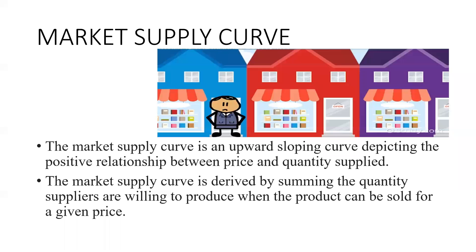Today we are going to study about what is market supply. So in short run and long run, you have studied about the market supply curve. The market supply curve is a combination of all the producers supplying goods and services to the market. By combining all those individual producers, we will get the overall market supply curve.